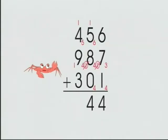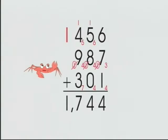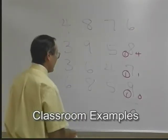1 thousand, 4 hundreds. Save the 1000 for later. 4 plus 3 is 7 — record. Move the 1000s to the 1000s column. Record the sum: 1,744. Next problem: 6, 7, 8, 8.